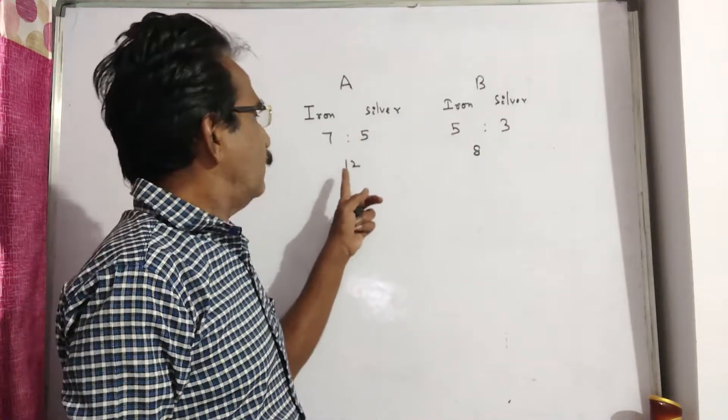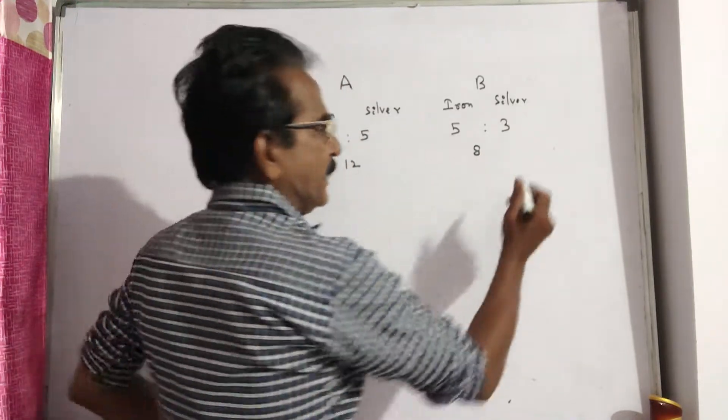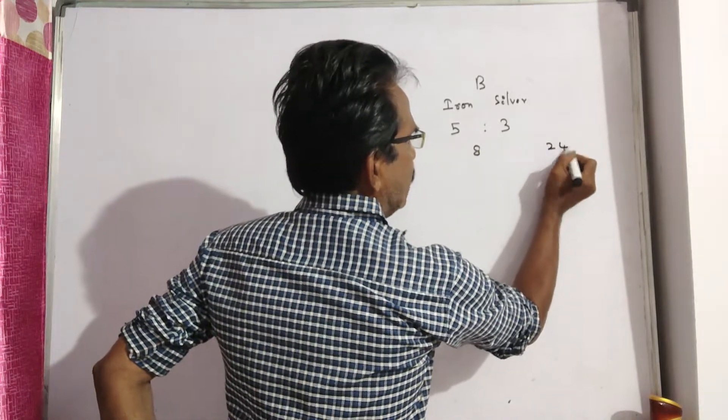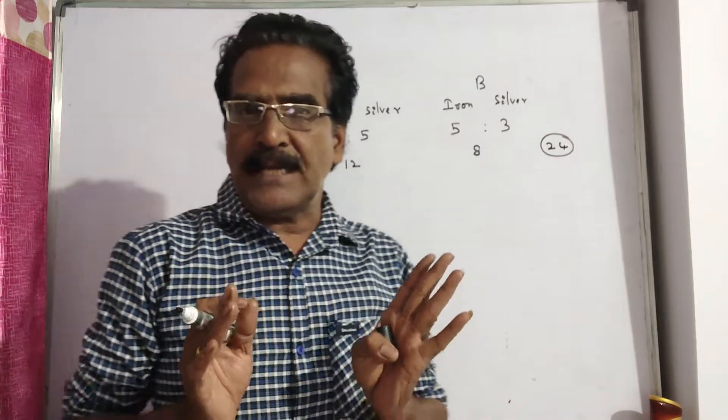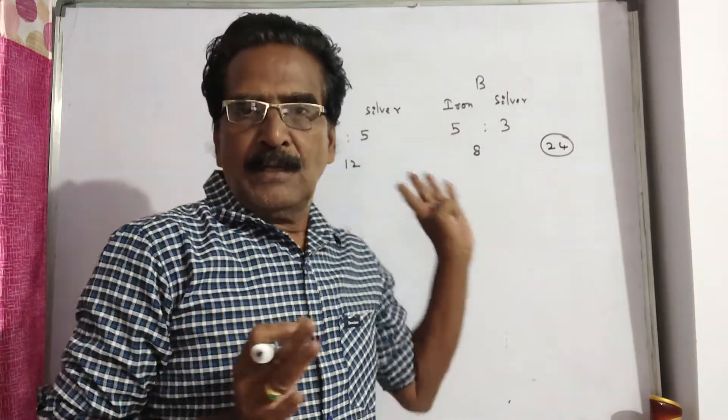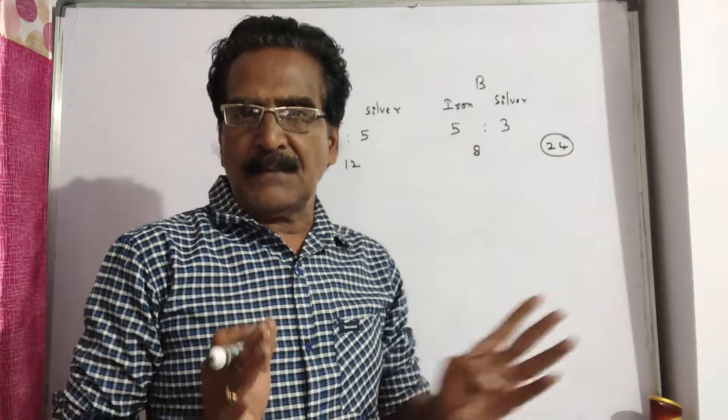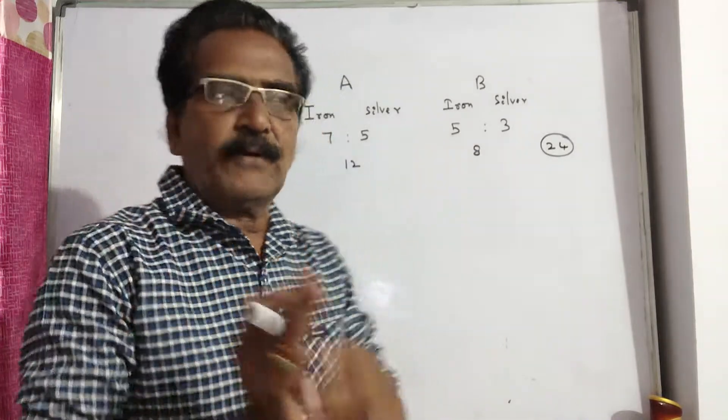LCM of 12 and 8 is 24. So the quantities must be equal to 24. The two quantities must be made equal to 24.